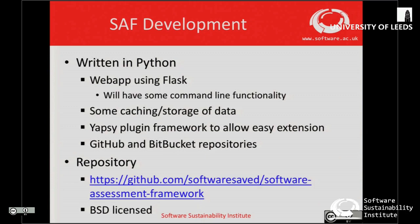In response to a question about whether adding the SAF robot as a collaborator would let it assess a private repository: basically if you do a login using your OAuth GitHub credentials, then yes — functionality to be completed soon. For now you can do this manually by generating a new token, putting it into a config file, and running it. If you want to see all the code, it's at this link and it's BSD licensed.